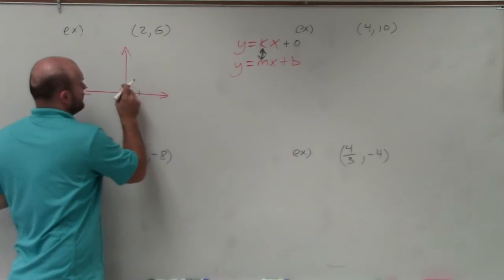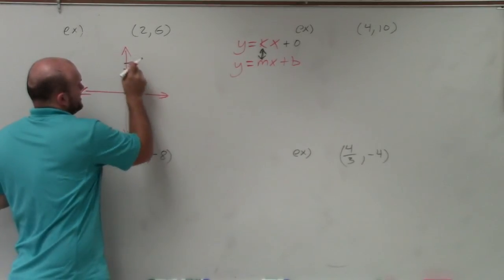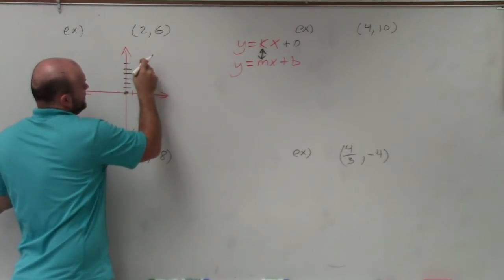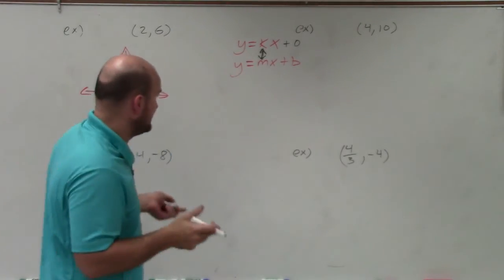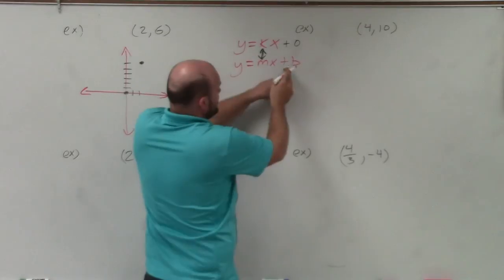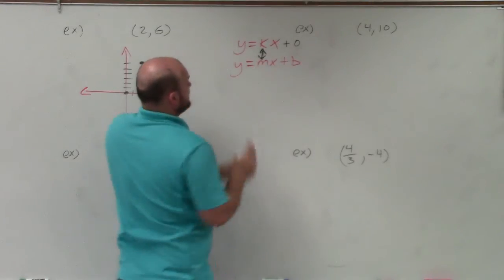So we go over 1, 2, and then up 1, 2, 3, 4, 5, 6. So if we were to graph the line, we'd just graph between those two points. But we need to figure out what the equation is. Well, again, we already know what the y-intercept is. We just need to figure out the slope.